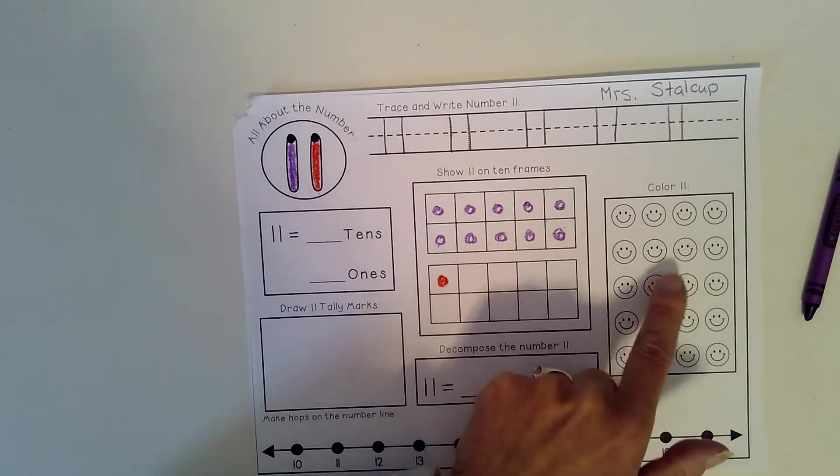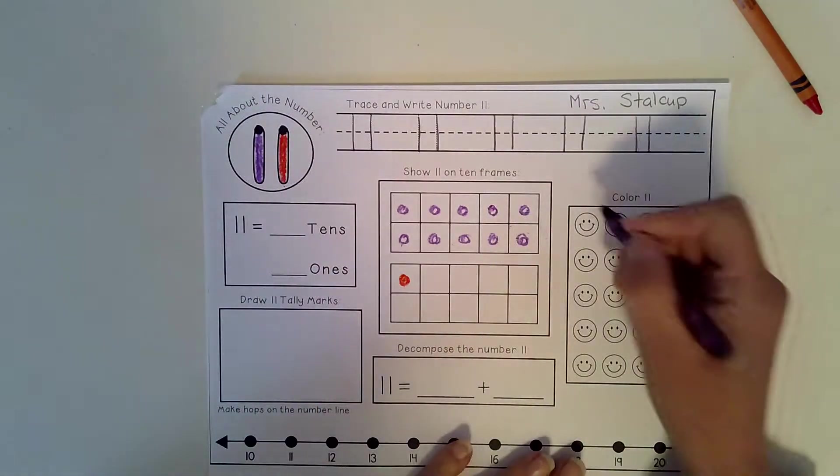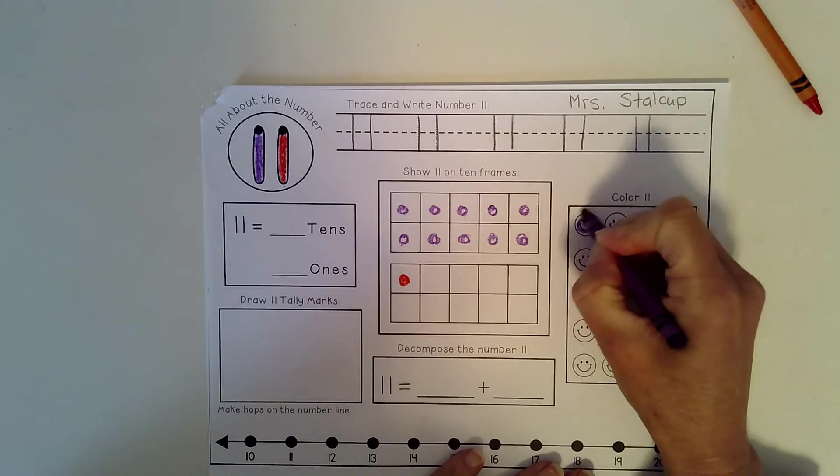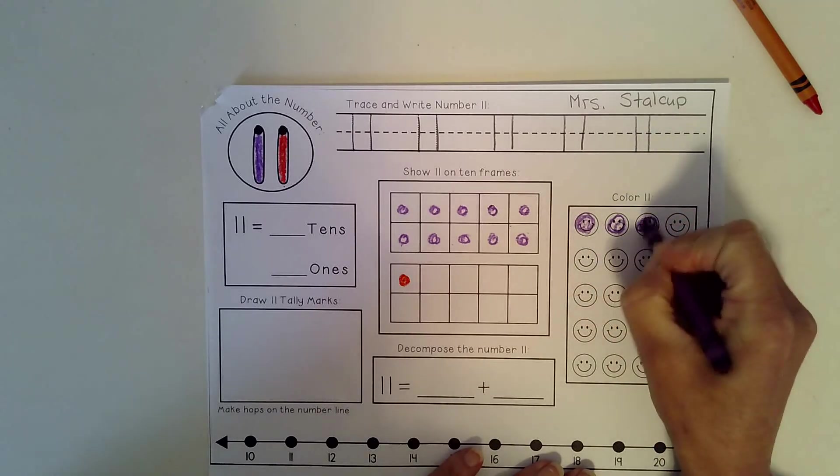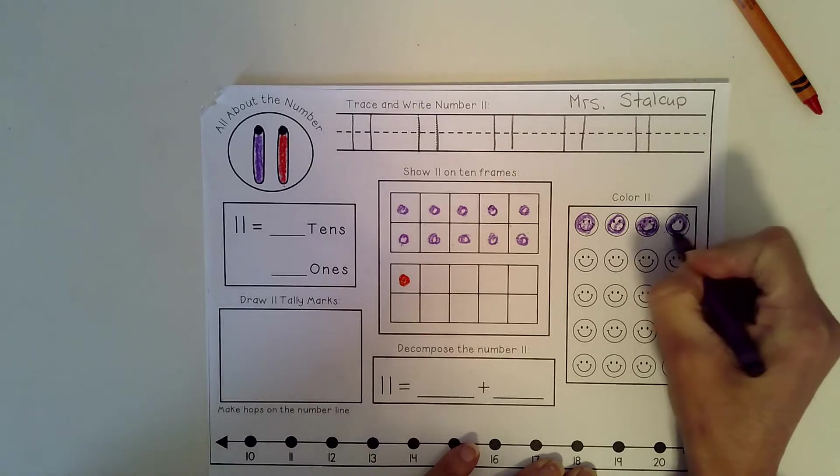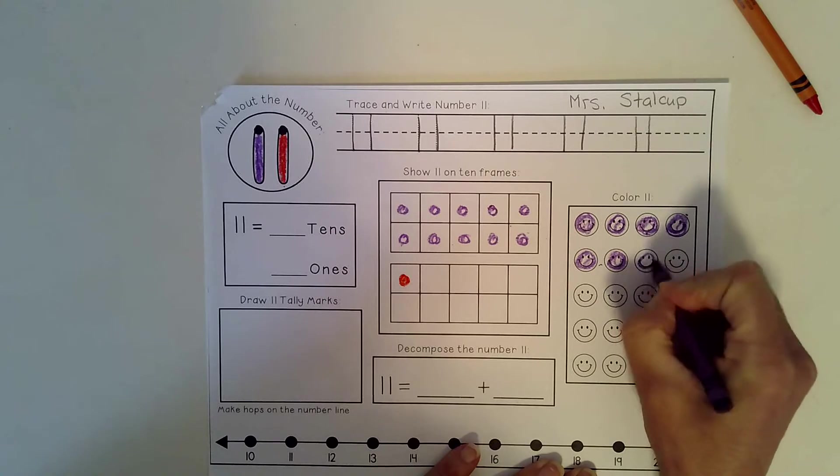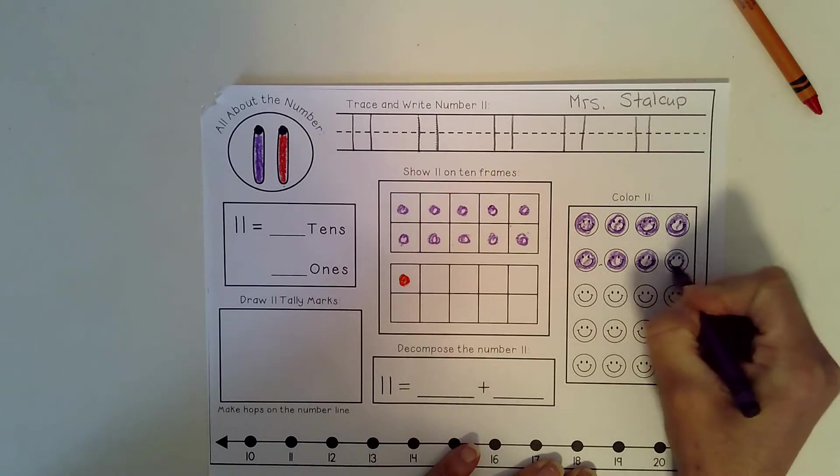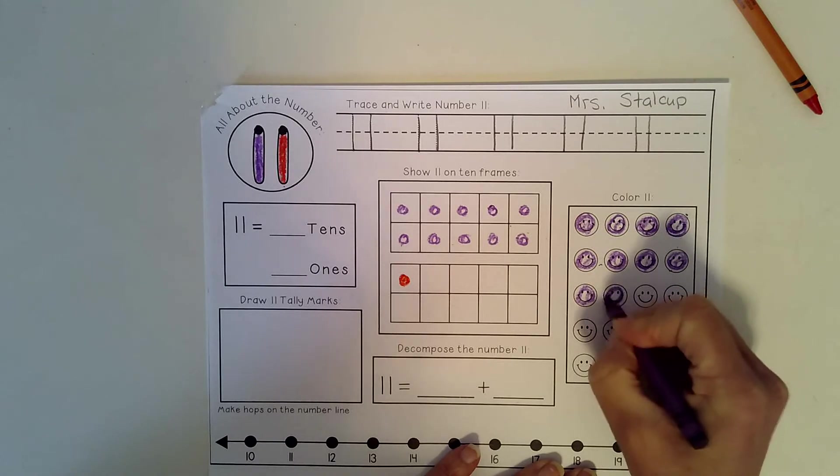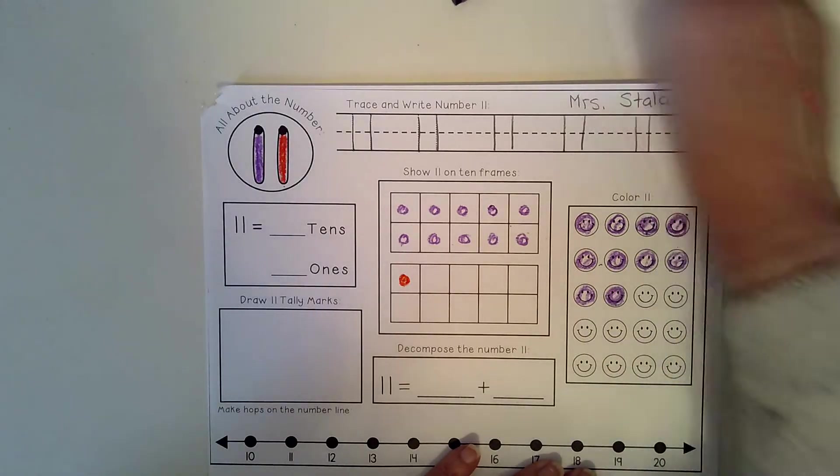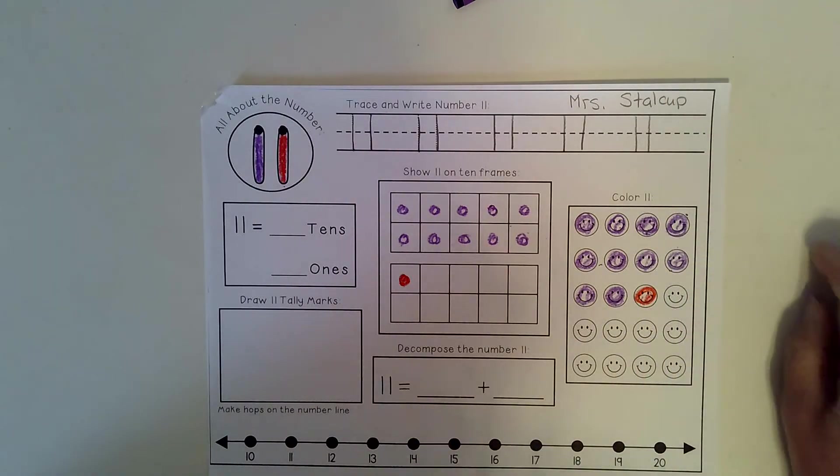Let's do the same thing over here with the smiley faces. So I'm going to use the color that I used to color the tens. We'll color 10 smiles: 1, 2, 3, 4, 5, 6, 7, 8, 9, 10. Oh, time to switch colors. 11. 1 ten and one more.